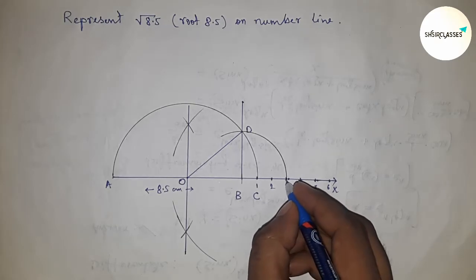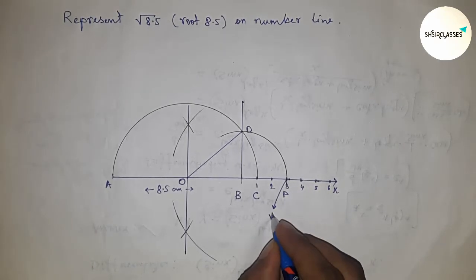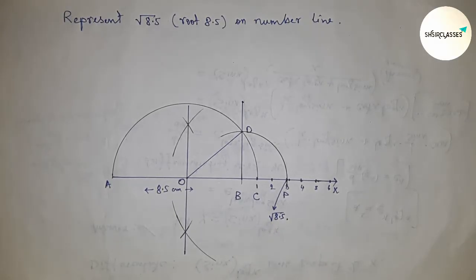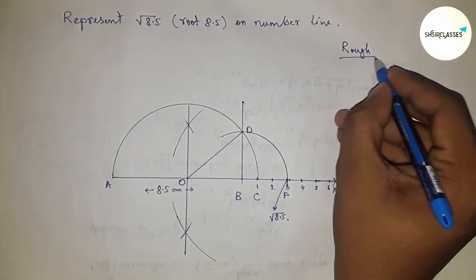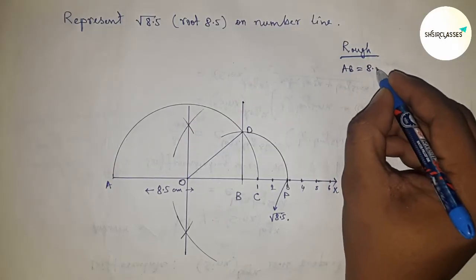This is point P, and it is the representation of √8.5. Now let's roughly discuss the calculation.